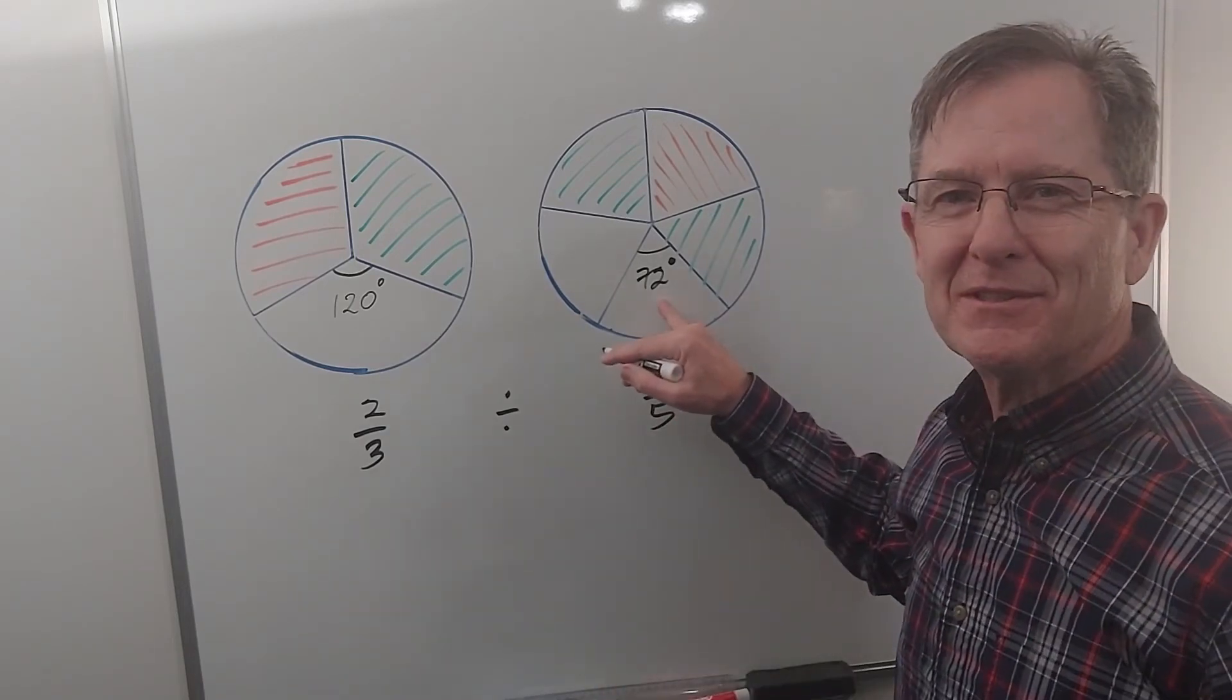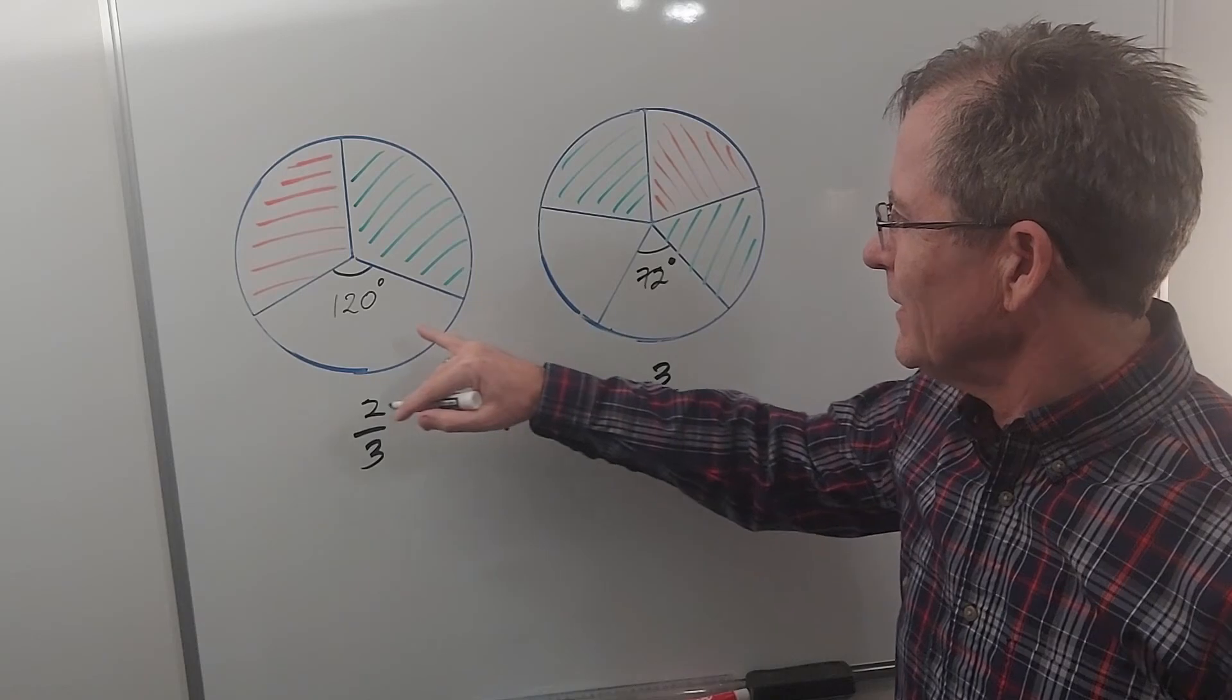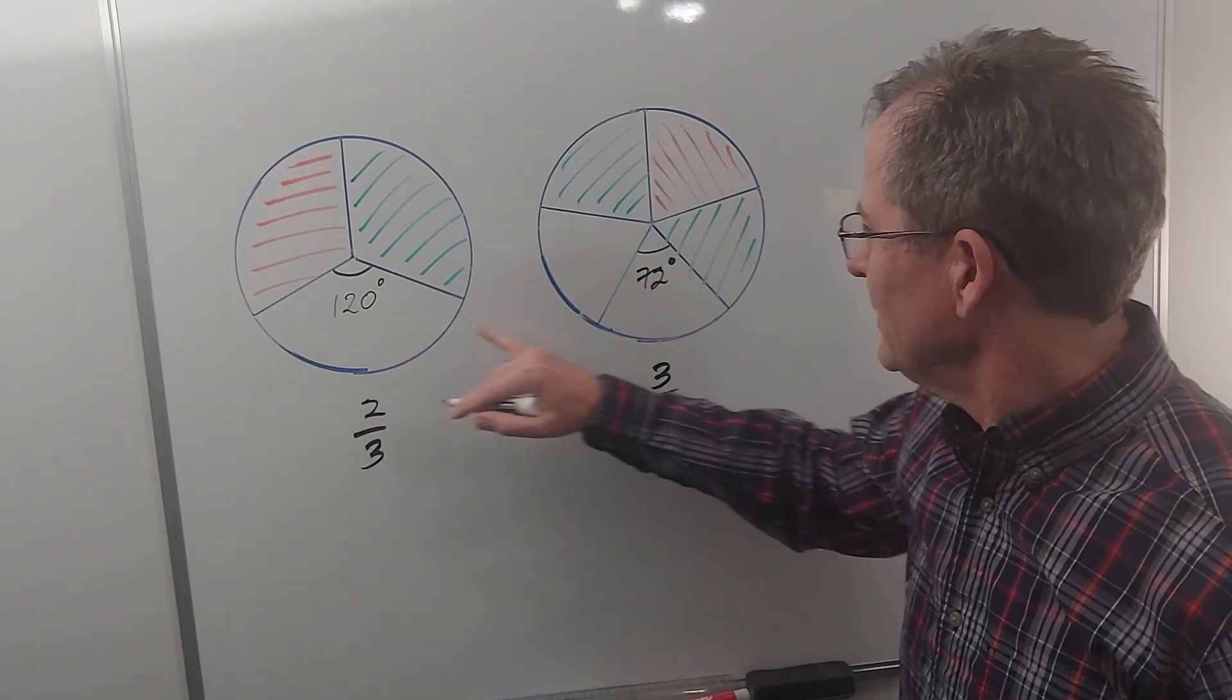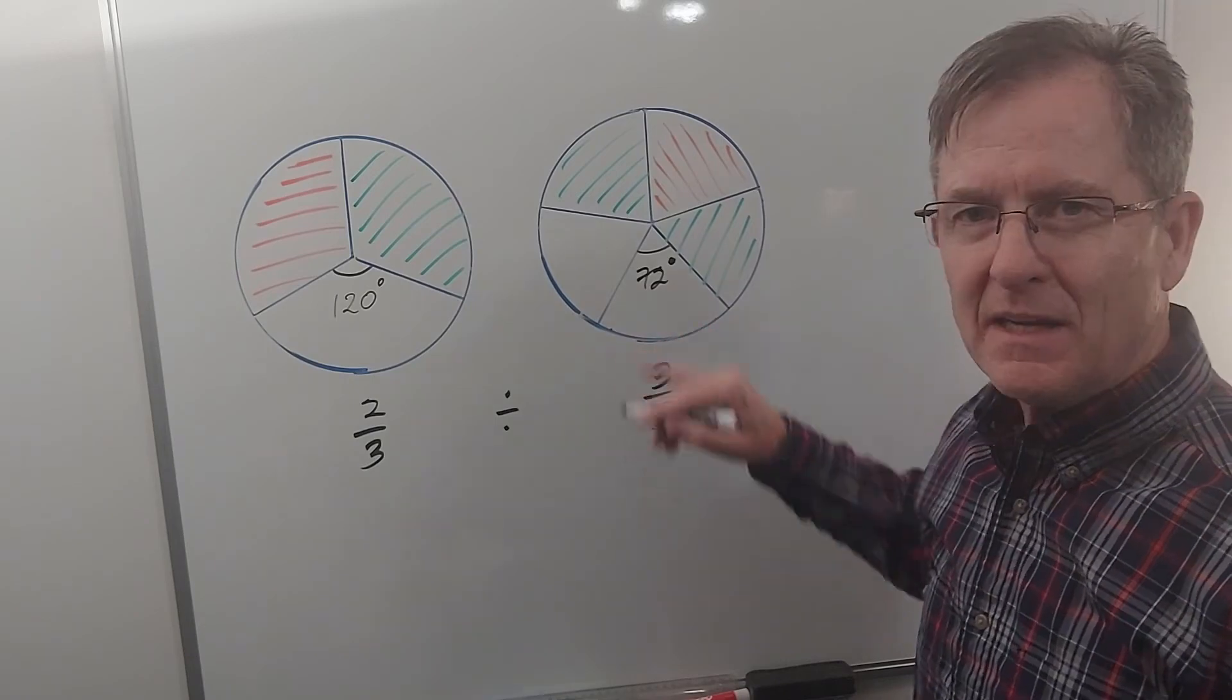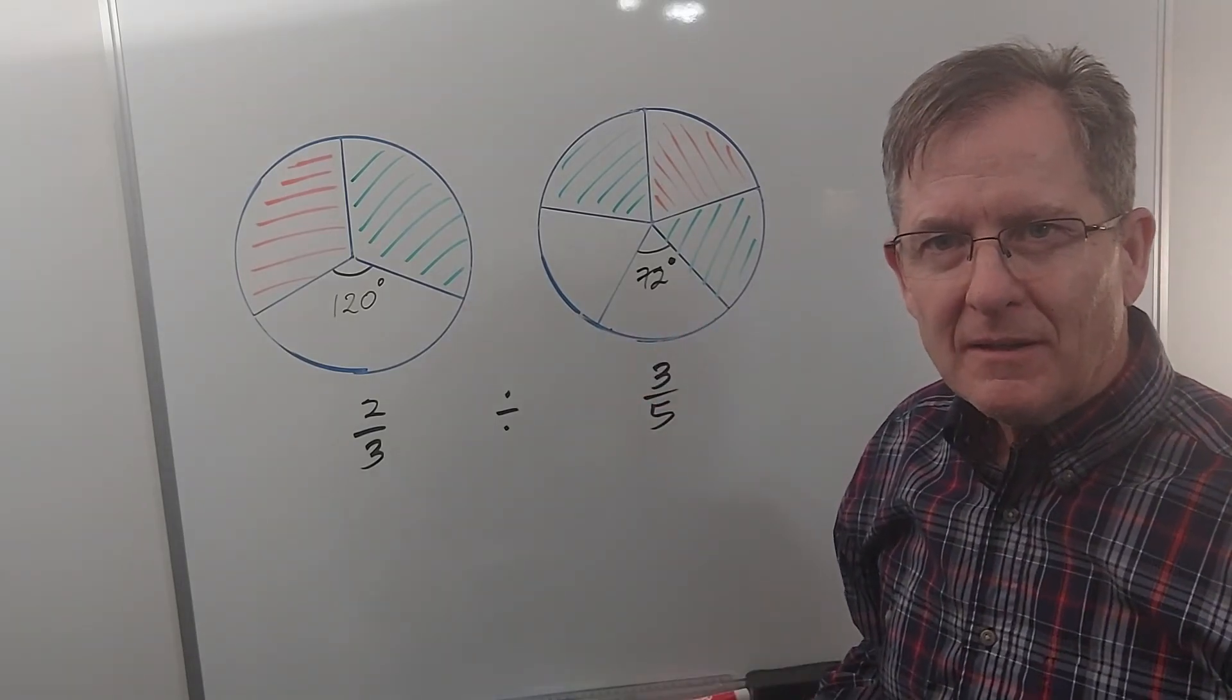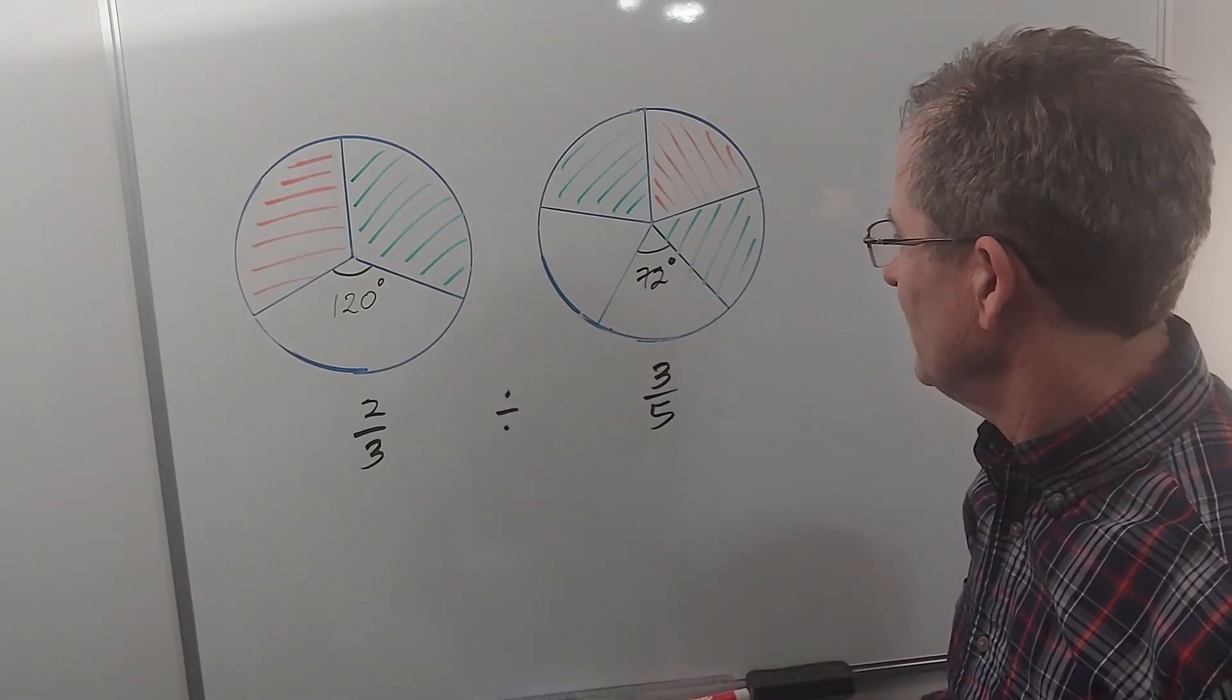3 times 72 is 216, so I'm dividing 240 by 216. That should give me an answer bigger than 1 because 240 is bigger than 216 degrees.